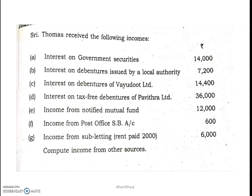We have an illustrative problem on income from other sources. Shree Thomas received the following incomes: interest on government securities, interest on debentures issued by local authority, interest on debentures of Vaidwood Limited, interest on tax-free debentures of Pavitra Limited, income from notified mutual fund, income from post office SB account, and income from subletting. Rent paid: 2,000. Total: 6,000. Compute income from other sources.